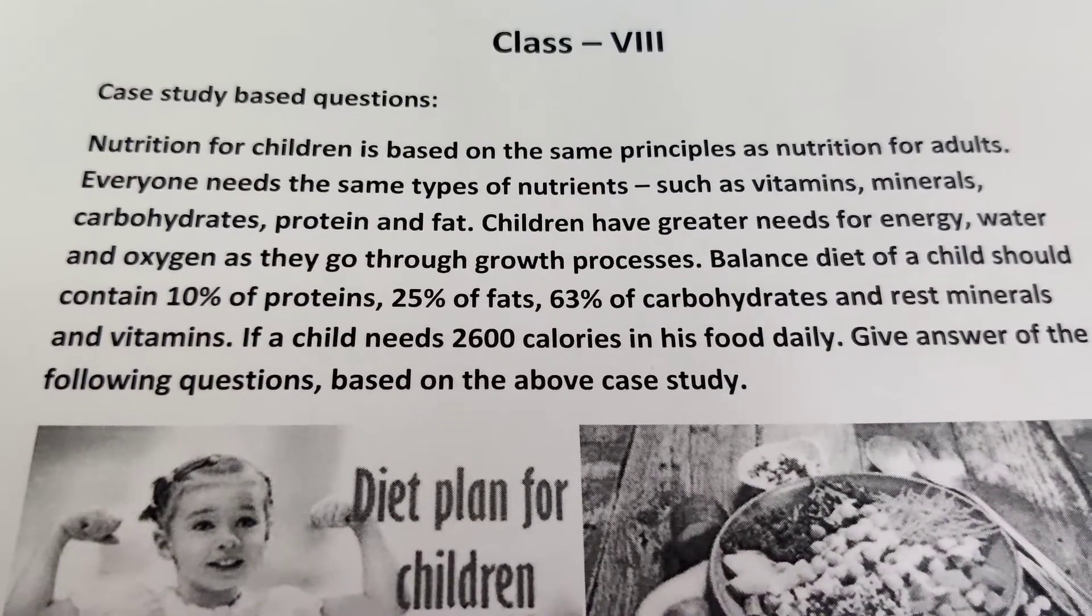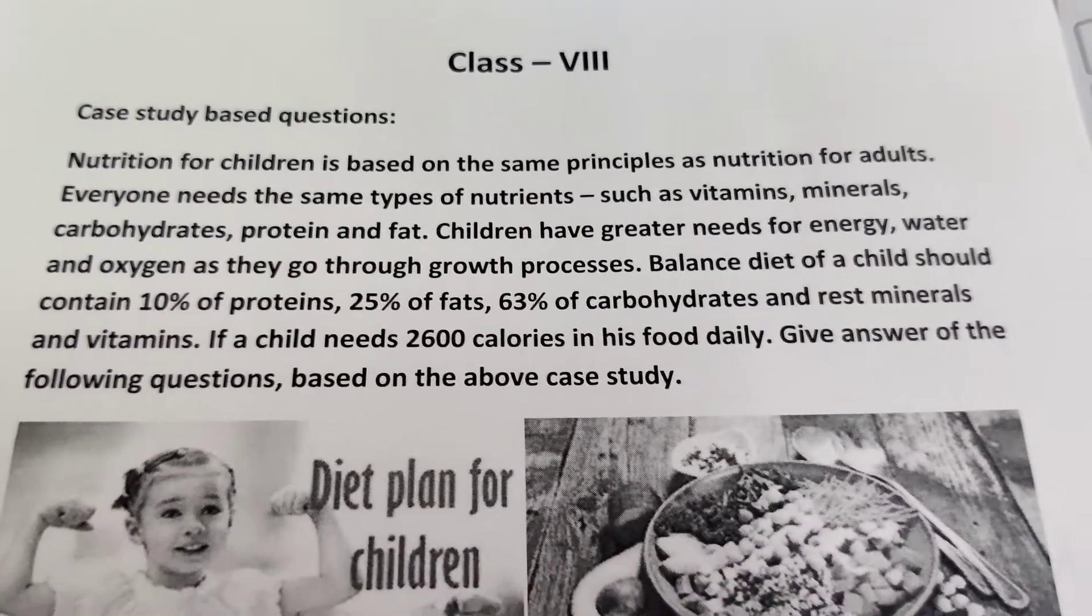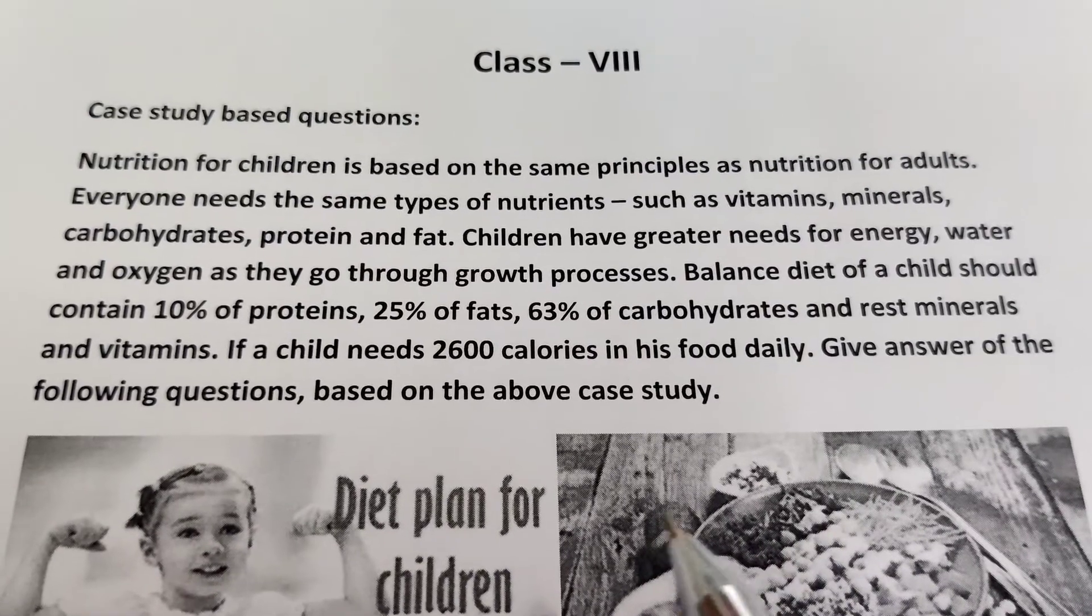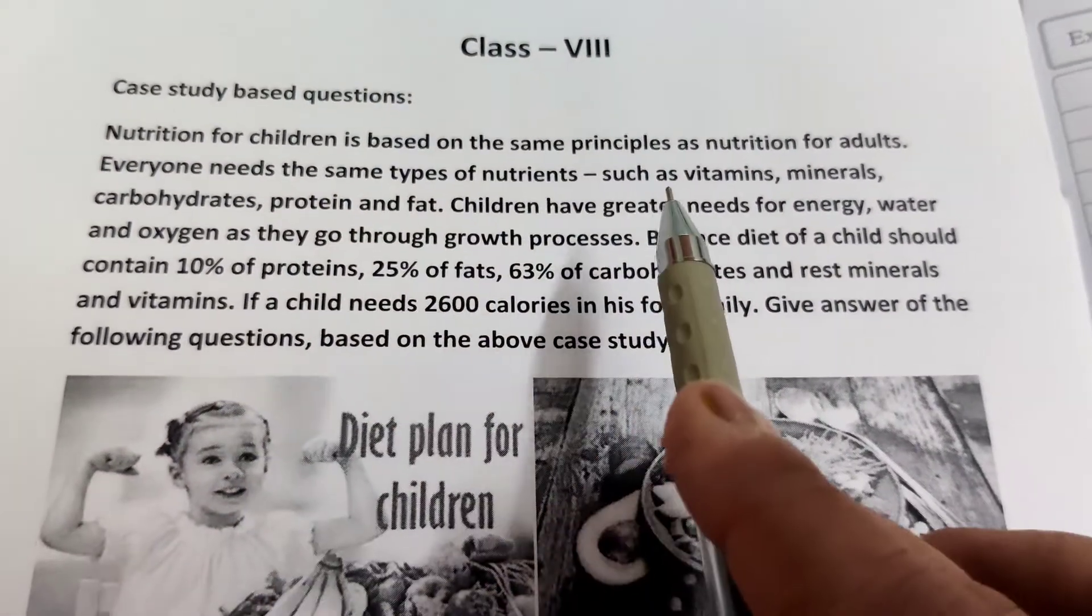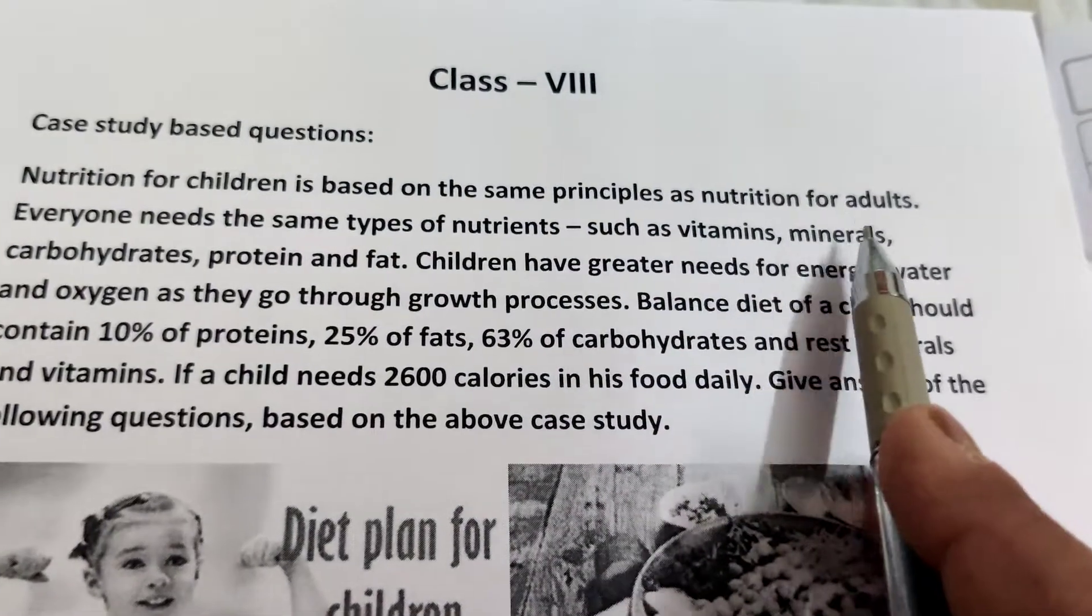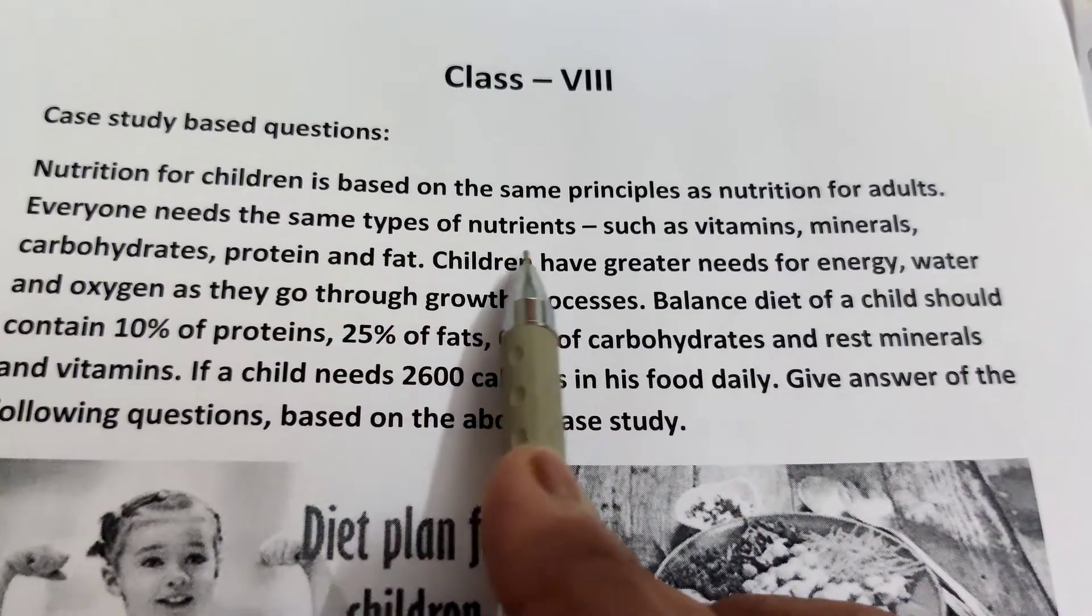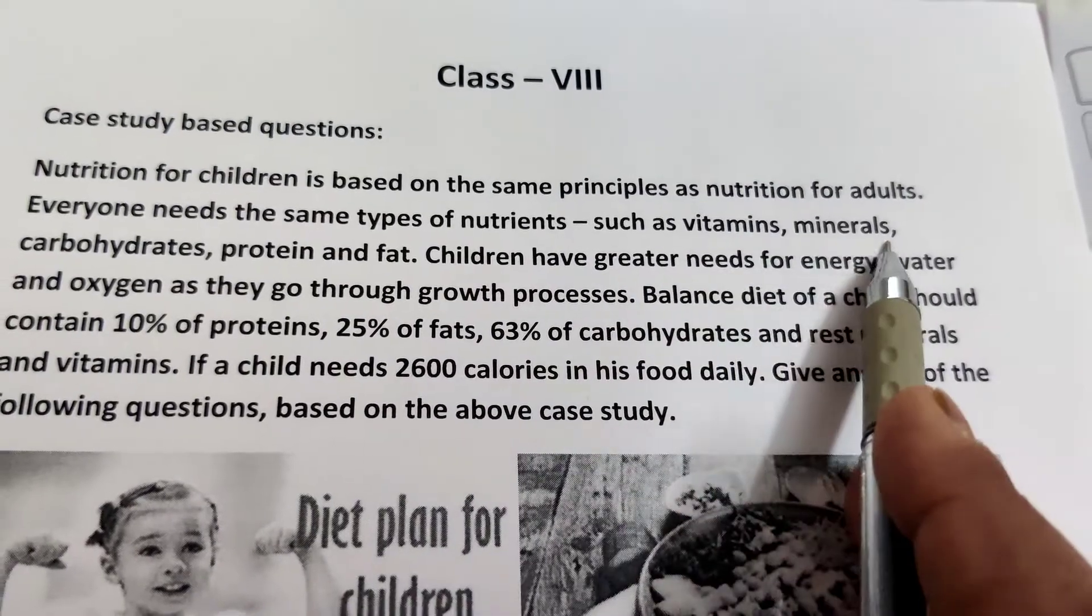Case study based question for Class 8 maths, the chapter is percentage, profit, loss and discount. Nutrition for children is based on the same principles as nutrition for adults. Everyone needs the same types of nutrients such as vitamins, minerals, carbohydrates, protein and fat.